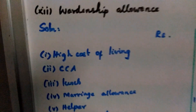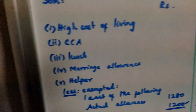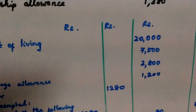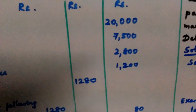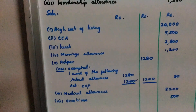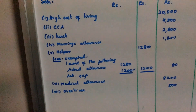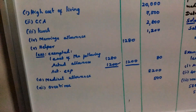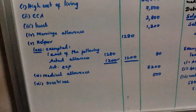Solution. First, High Cost of Living Allowance is a fully taxable allowance — $20,000. Next, City Compensation Allowance (CCA) is also fully taxable — $7,500.